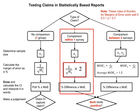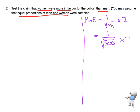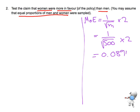The formula is one over the square root of n1 times two, and my confidence interval is the percentage difference plus or minus that margin of error. So my margin of error is one over the square root of 500 times two. Typing that in gives me 0.0894, and multiplying by 100 to convert to a percentage gives me 8.94%. So there's my margin of error.